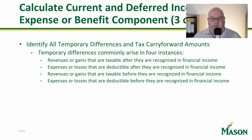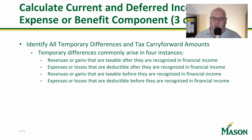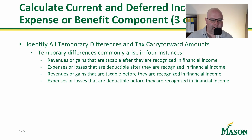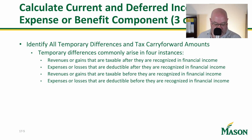The next thing is to identify all temporary differences and carry-forward amounts. They arise in four different instances. Tax software like UltraTax actually uses language like: income reported on book but not for tax, expenses reported on book but not for tax, income on return not on book, and so forth. If you follow that language, it's going to be good. Some tax softwares do a better job of this than others — UltraTax does very well.